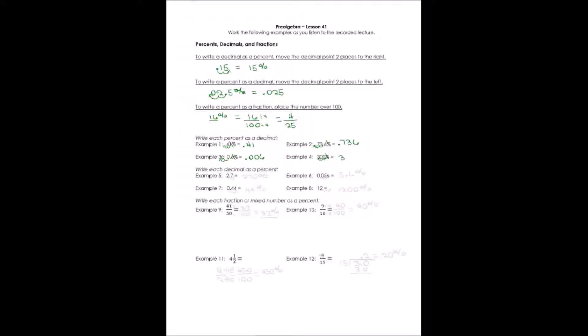For example five, I'm going to be adding a percent sign, and my decimal point is going to move toward it. So I'm going to be moving it two places to the right. I'll add a zero for this one. 2.7 ends up being 270%.